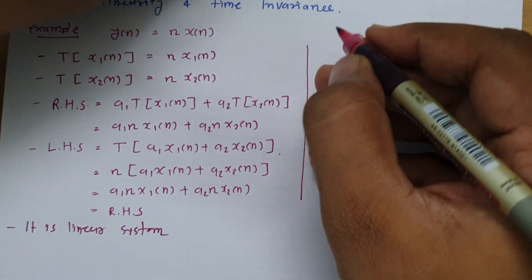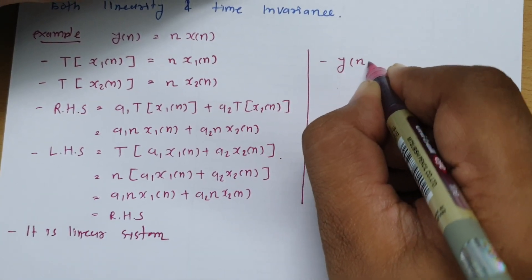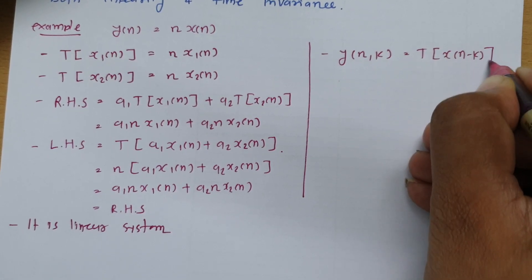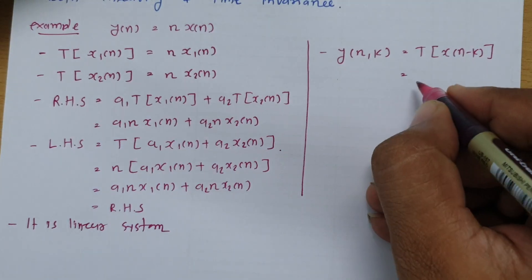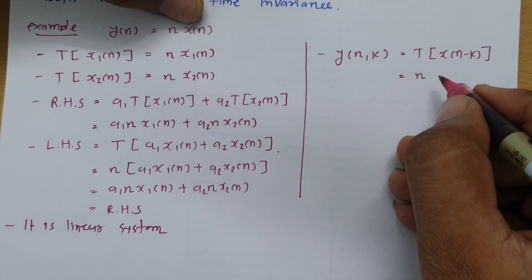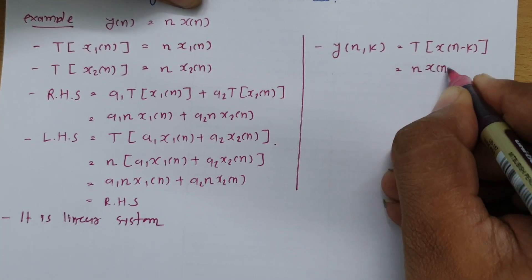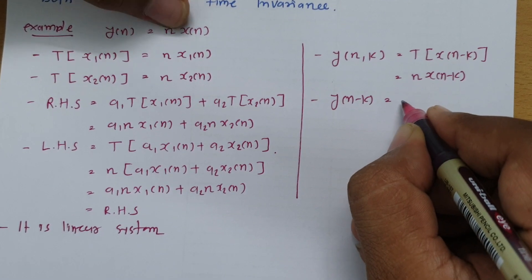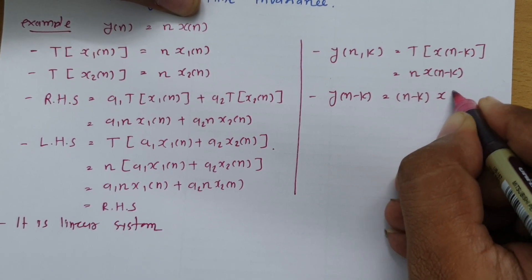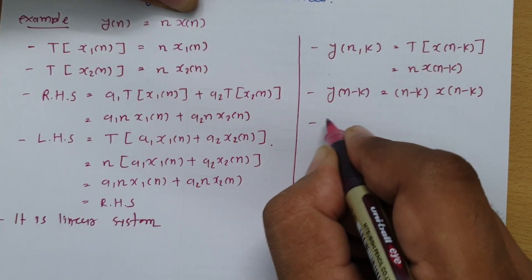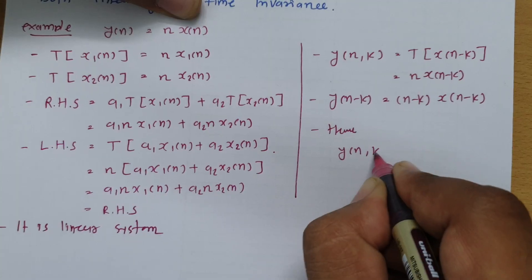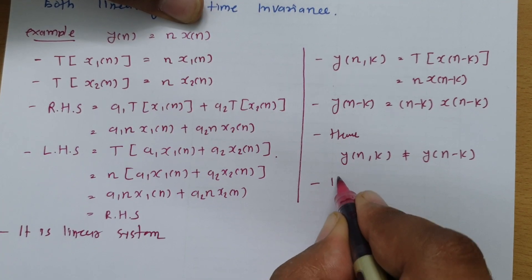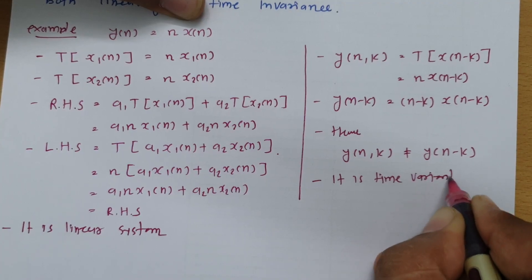Now let us calculate the time variance condition. We need to calculate y(n, k), which means we replace x(n) with x(n minus k), so n remains as it is and x(n) changes to x(n minus k), giving y(n, k) = n·x(n minus k). When we calculate y(n minus k), we replace all n with n minus k, giving (n minus k)·x(n minus k). Since y(n, k) is not equal to y(n minus k), this system is a time variant system.